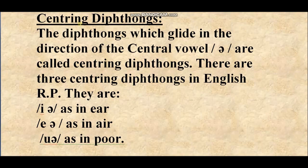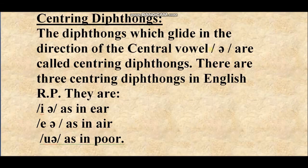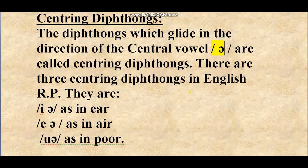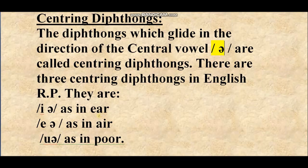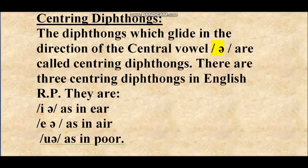Now comes another classification: centering diphthongs. The diphthongs which glide in the direction of the central vowel /ə/ are called centering diphthongs. There are three centering diphthongs in English RP. They are: /ɪə/ as in 'ear', /eə/ as in 'air', and /ʊə/ as in 'poor'.